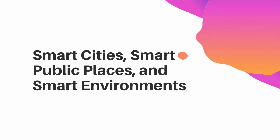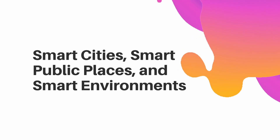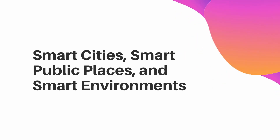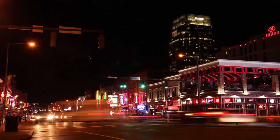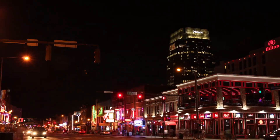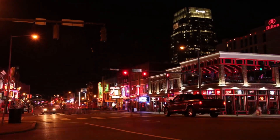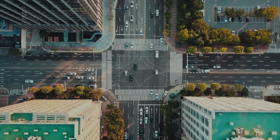Let's look at them one by one. Smart cities, smart public places, and smart environments: smart cities are urban areas that use different types of ICT — information and communication technologies — to improve the performance of the core infrastructure elements of the city. Core infrastructure elements include ensuring adequate water supply, assured electricity supply, proper sanitation, and wastewater management.